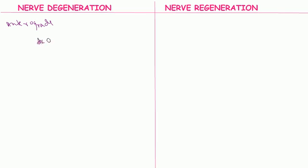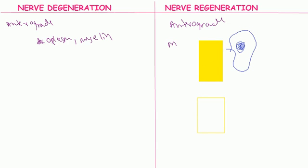In anterograde type nerve regeneration, the macrophages eat away the debris after the nerve injury. The macrophages eat away the debris and only an empty endoneurial sheath is left out, which is called a ghost tube.